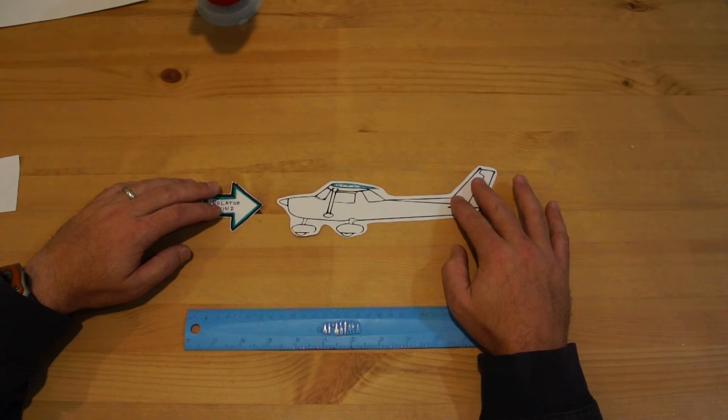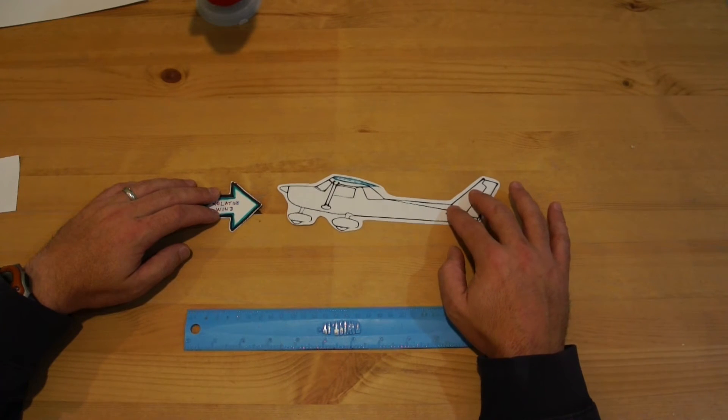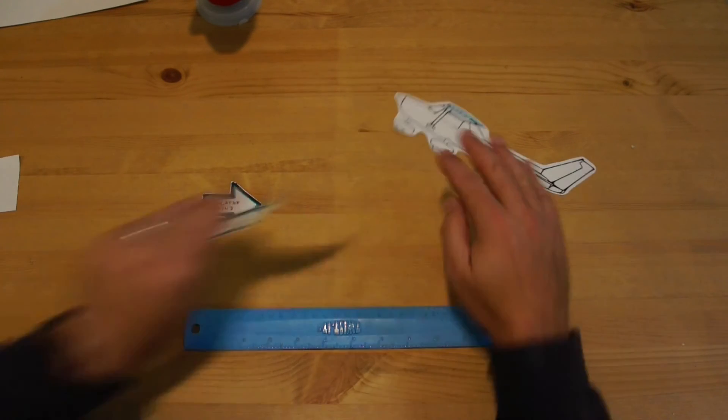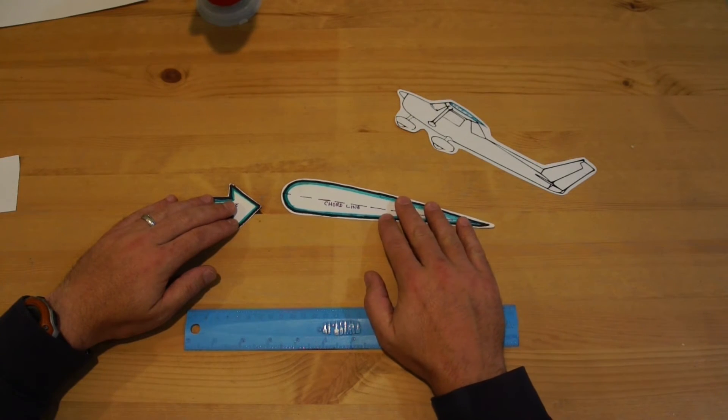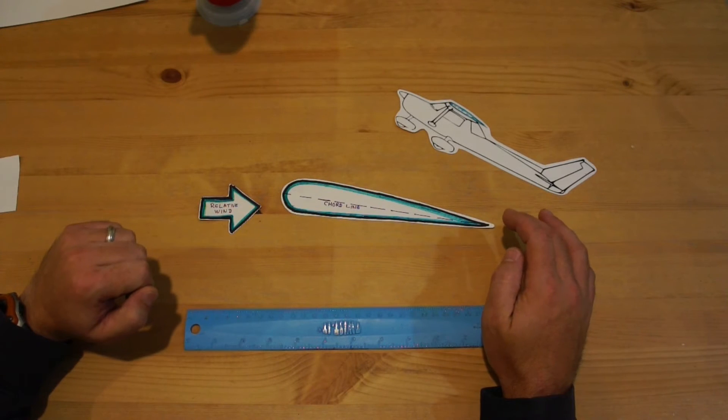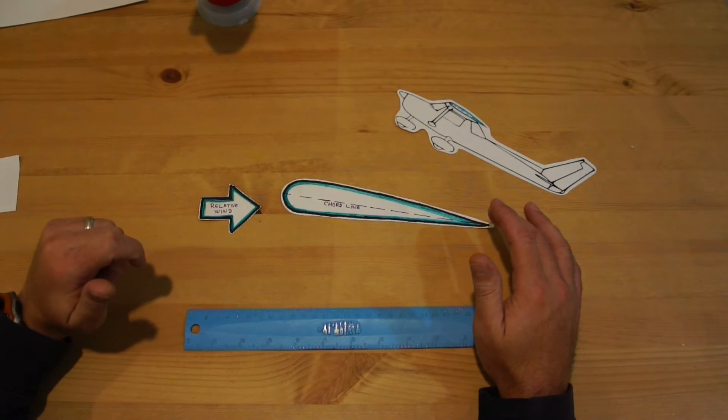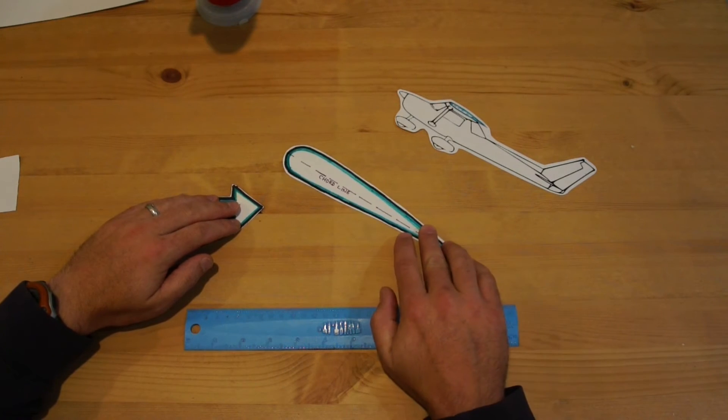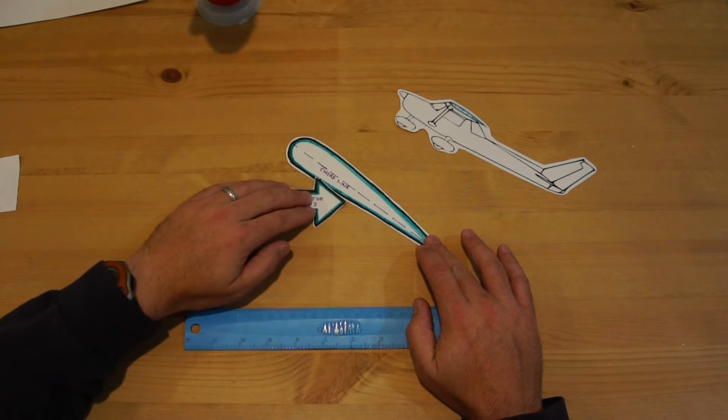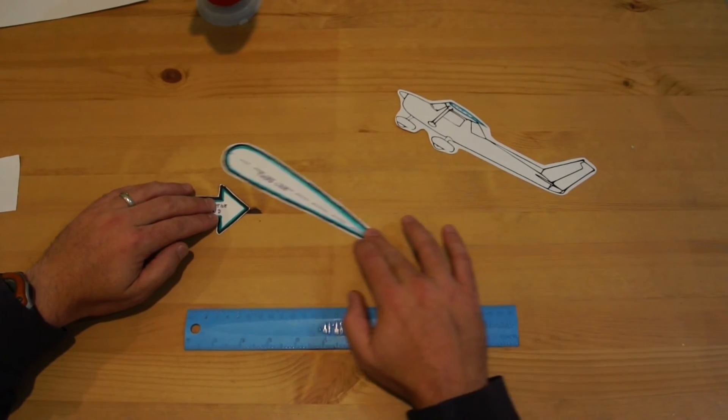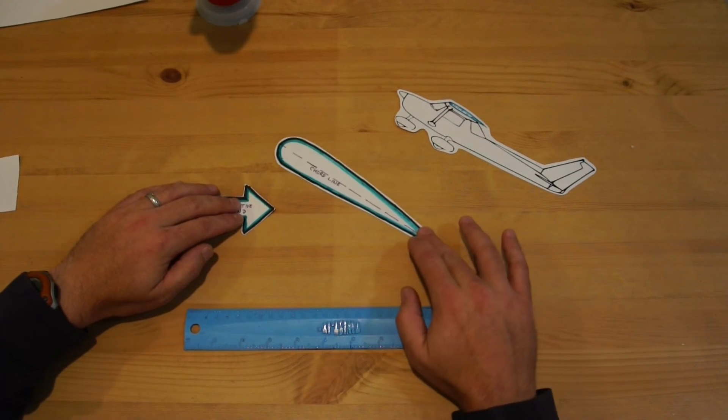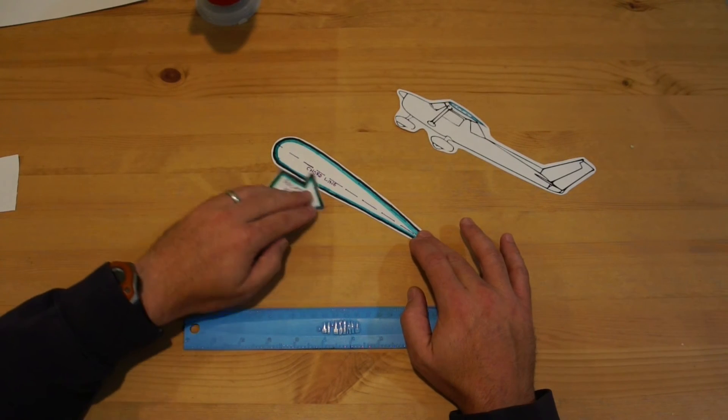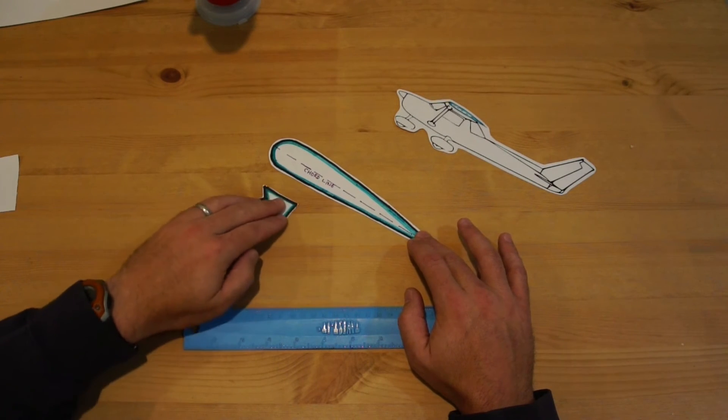If you want to hold your altitude while you have less power, what you need to do to create as much lift of the wings is begin to pitch up. As you pitch up this cord line begins to increase its angle. Then we look at Newton's third law which tells us that for every action there is an equal and opposite reaction.